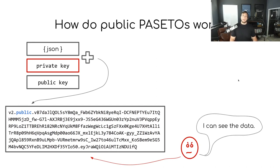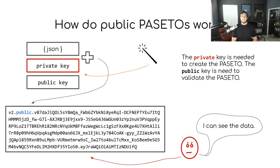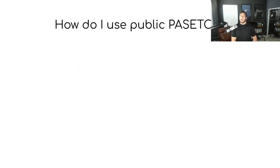If an attacker gets a hold of a public PASETO, keep in mind that the attacker will be able to see any JSON data stored inside it. A rule of thumb: don't create public PASETOs and put data inside them that you aren't comfortable being public. The magic of public PASETOs is all based on asymmetric cryptography — the private key is needed to create the PASETO, and the public key is what's needed to validate it.